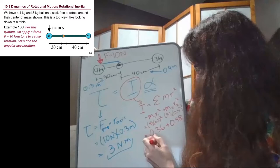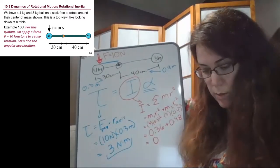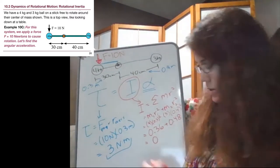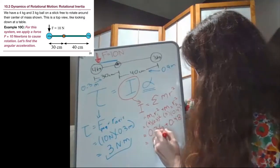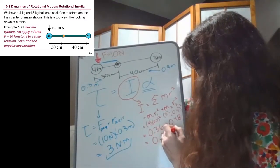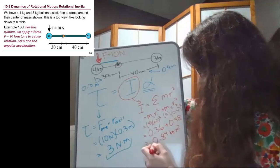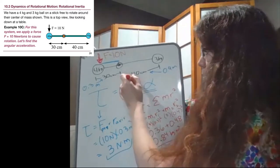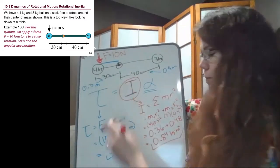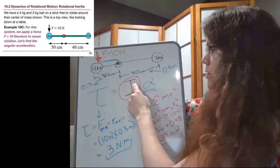So we're going to have the sum of those two is 0.84 kilograms times meters squared. And this will go into this term here, the moment of inertia.